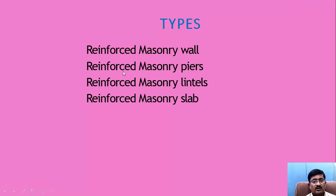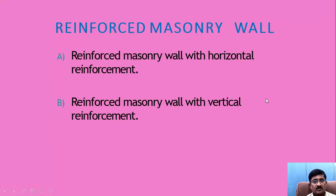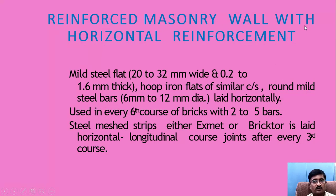Types of reinforced masonry: reinforced masonry wall, reinforced masonry piers, reinforced masonry lintels, and reinforced masonry slab. For reinforced masonry walls with horizontal reinforcement: mild steel flats of 20 to 32 mm wide and 0.2 to 1.6 mm thick, hoop iron flats of similar cross section, round mild steel bars 6 mm to 12 mm diameter laid horizontally — used in every sixth course of bricks with 2 to 5 bars. Steel mesh strips, either X-Mate or Brickter, are laid in horizontal longitudinal course joints after every third course.